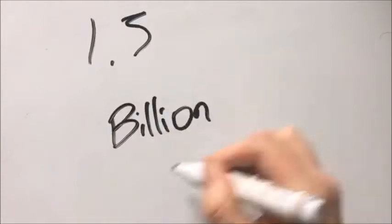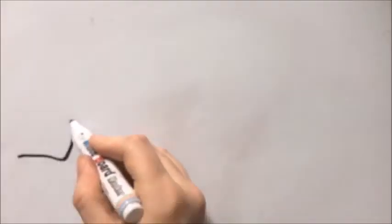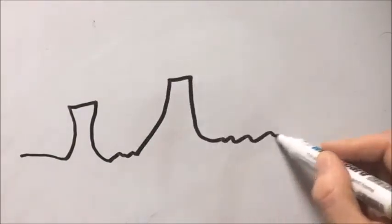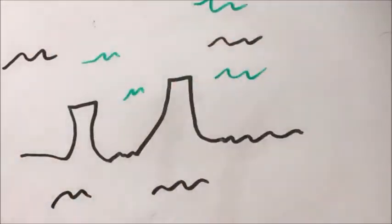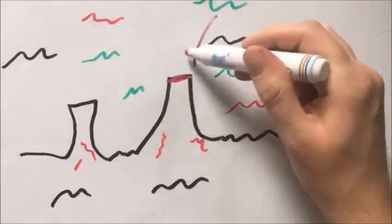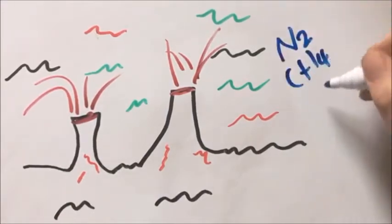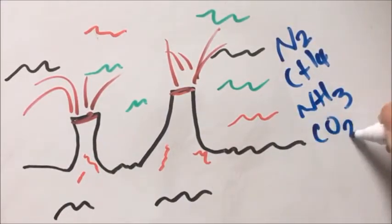1.5 billion years ago, the Earth's climate was hot, with lots of extremely active volcanoes, and an atmosphere composed mostly of nitrogen, methane, ammonia, carbon dioxide and water. There was little, if any, oxygen in the atmosphere, and archaea and some bacteria evolved in these conditions and are still able to live in similar harsh conditions today.